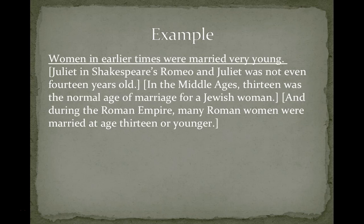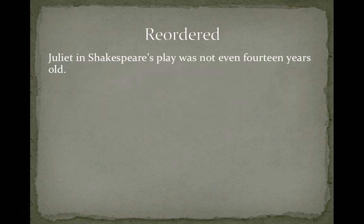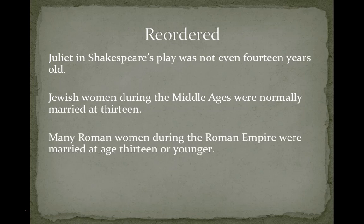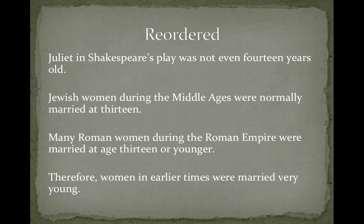If we're going to identify the premises and conclusions in this argument, we're going to come up with something like this. The conclusion is: women in earlier times were married very young, and then we have three examples from which that conclusion is generalized. To see the form of this argument most clearly, let's look at it in the proper order. First, Juliet in Shakespeare's play was not even 14 years old. Jewish women during the Middle Ages were normally married at 13. Many Roman women during the Roman Empire were married at age 13 or younger. And from this, we generalize the conclusion — therefore, women in earlier times were married very young.